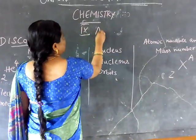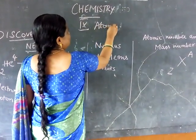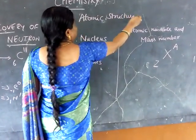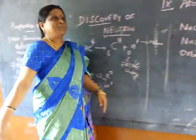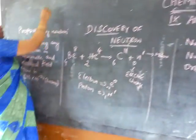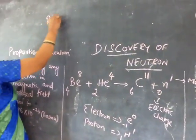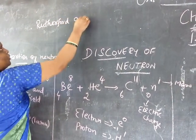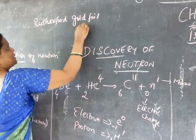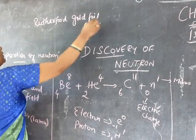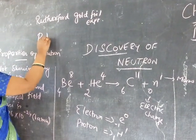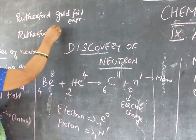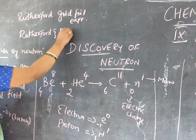Hello students. Today we will start atomic structure. In last class, what we saw? Rutherford's gold foil experiment, and apart from that, Rutherford and Bohr's model with its limitations. That we saw in last class.